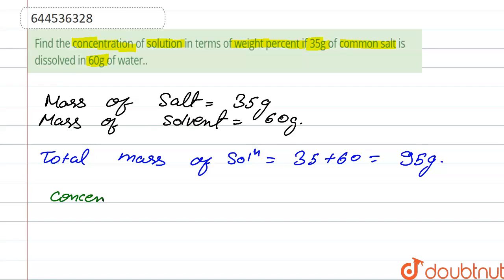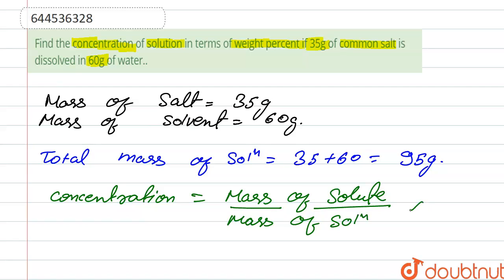Concentration is calculated as mass of solute upon mass of solution times 100. So when we put in the values, that is mass of solute which is 35 grams upon